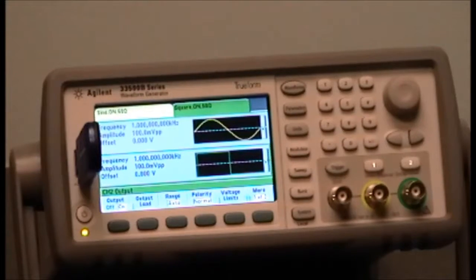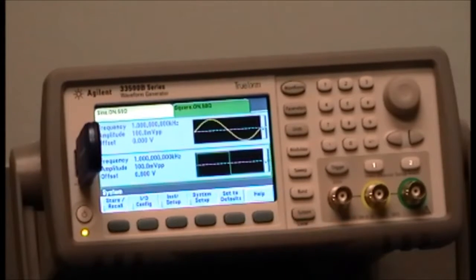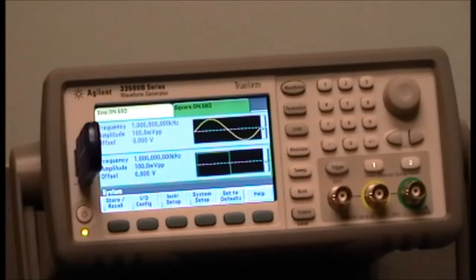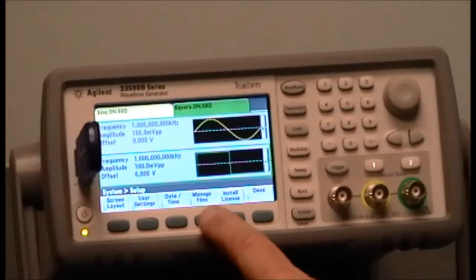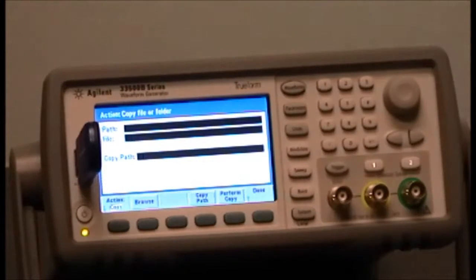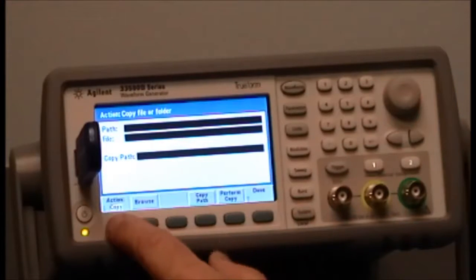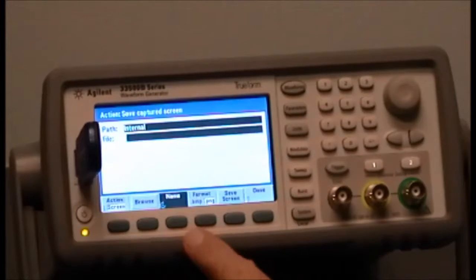There's a few steps to follow and here's the buttons that you need to push. On the function generator push the system button then the system setup, manage files. Action has to be screen so we want to select this button, pick screen.